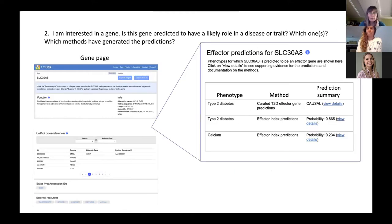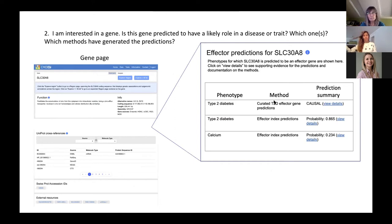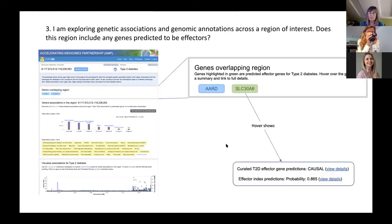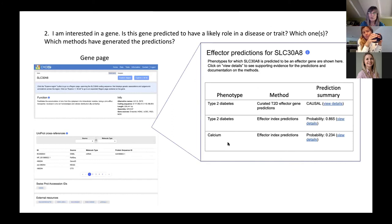Another use case would be if you're interested in a particular gene — you would want to know whether it's predicted to be an effector for diseases or traits. I think we could just have a table listing the methods that are predicting that this gene is an effector for a certain phenotype, show the top-level predictions, and link to the more details.